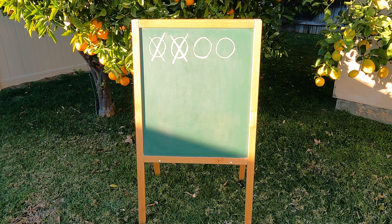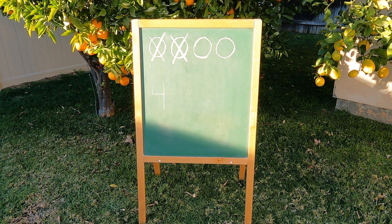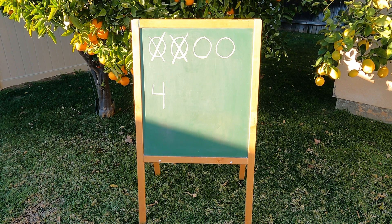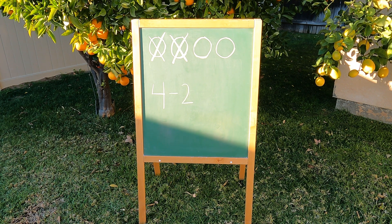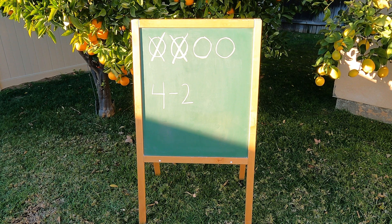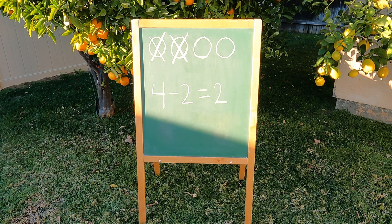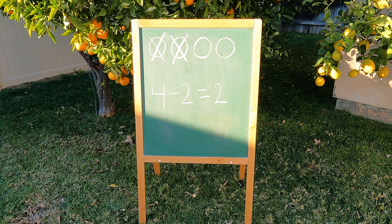Let's write our number sentence now. How many tennis balls did Hany start with? Good — four. Then Ginger snuck over and took two tennis balls away. Now because she took those tennis balls away, we're going to use a minus sign to show subtraction. We're going to write minus two. She took two balls — we crossed two off. How many tennis balls were left? Right, two. Just like in our picture, there are two tennis balls still there that are not crossed off. So we're going to write equals two. Let's read that number sentence together: four minus two equals two. Four little tennis balls take away two tennis balls equals two tennis balls left.